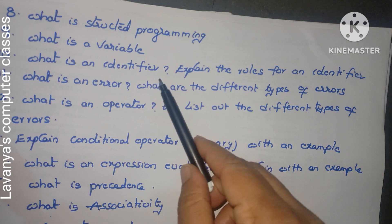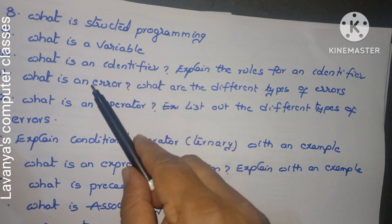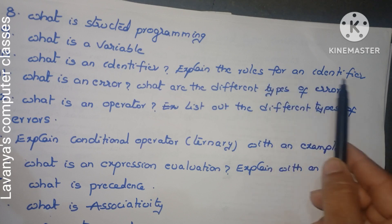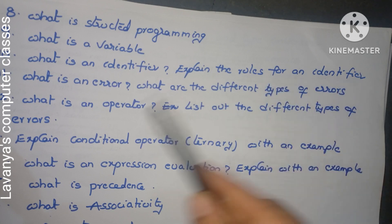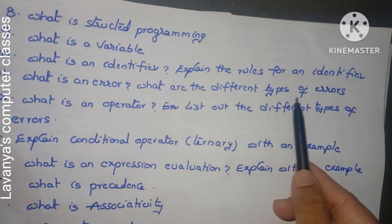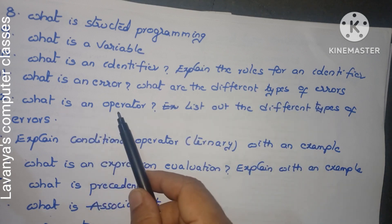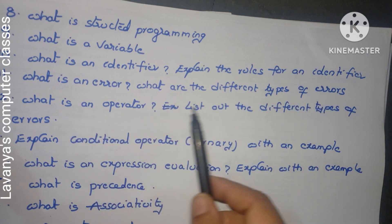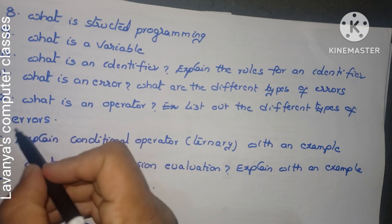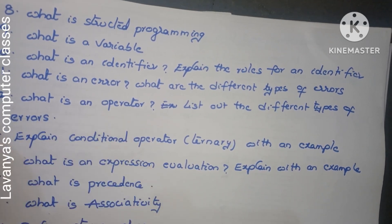From this point onwards, the questions are about C language. What is a variable? What is an identifier? Explain the rules for an identifier. What is an error? What are the different types of errors, like syntax errors or semantic errors? What is an operator? List out the different types of operators.